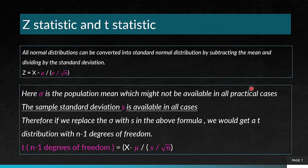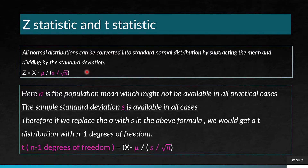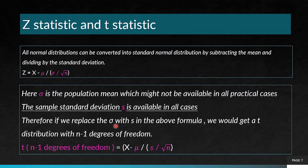What is a z-statistic? All normal distributions can be converted into a standard normal distribution by subtracting the mean and dividing by the standard deviation. So z is equal to (x-bar minus mu) divided by (sigma divided by the square root of n). Here, sigma is the population standard deviation, which might not be available in all practical cases. The sample standard deviation s is available in all cases. Therefore, if we replace sigma with s in the above formula, we get a t-distribution with n minus 1 degrees of freedom, giving t = (x-bar minus mu) divided by (s divided by the square root of n).